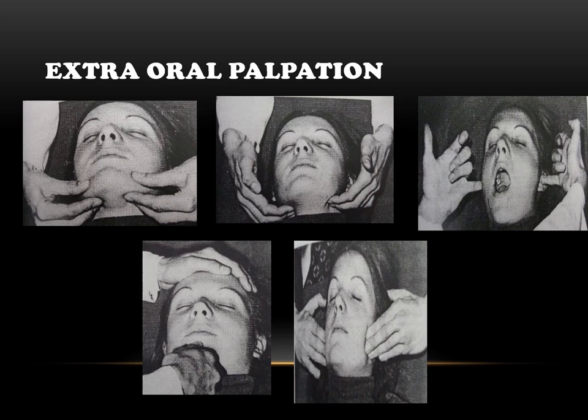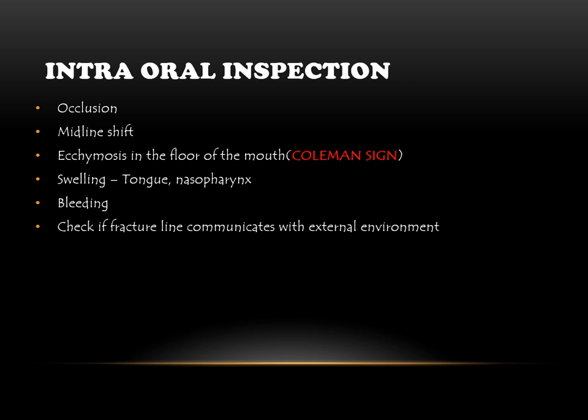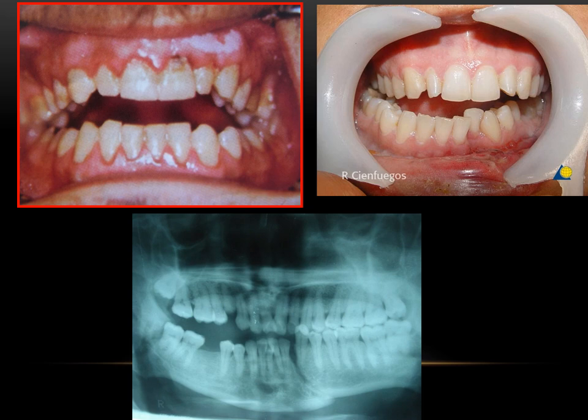Extraoral palpation involves looking for any step deformity if palpable and any tenderness — if the patient has pain in a particular region, it has to be noted. Intraoral inspection involves checking occlusion, midline shift, ecchymosis in the floor of the mouth (referred to as Coleman's sign), swelling of the tongue or nasopharynx, any intraoral bleeding, and whether the fracture communicates with the external environment.